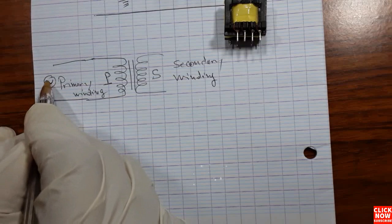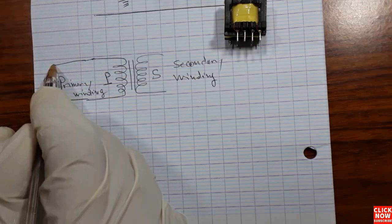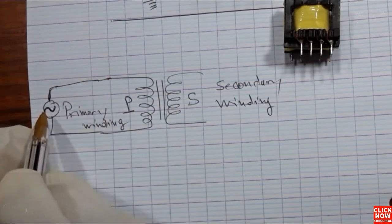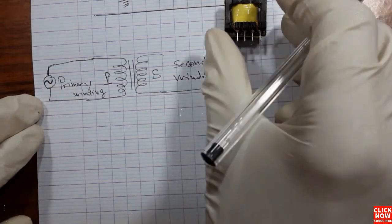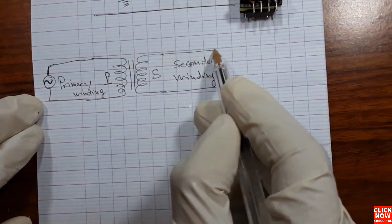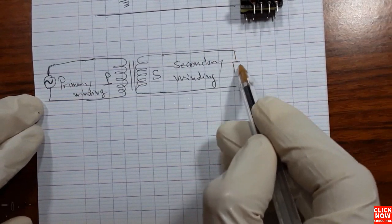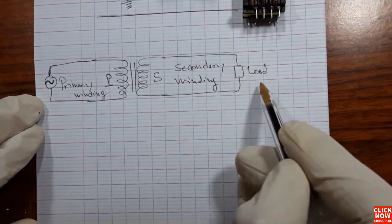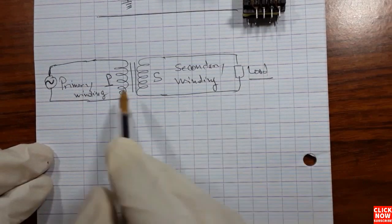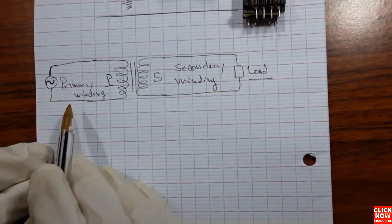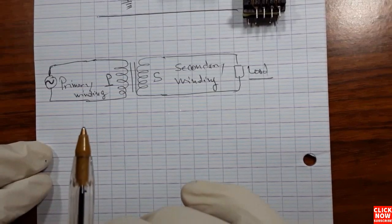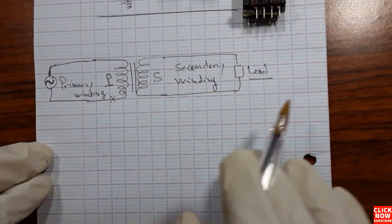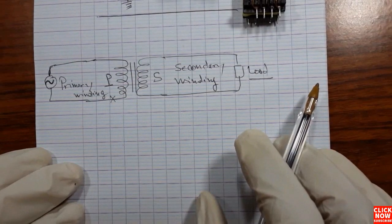Depending on the type of transformer, we have the power supply or the AC voltage connected to the primary winding. The energy passes to the secondary winding and then to the load. The load can be anything — maybe a circuit, maybe a lamp, etc. The output voltage change depends on the number of windings or turns inside the winding.